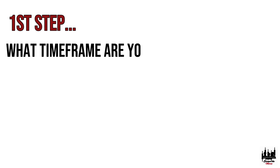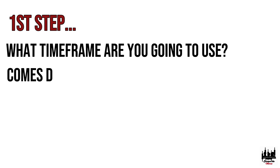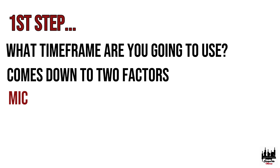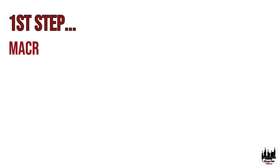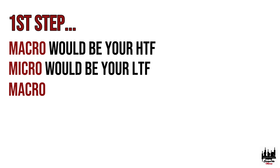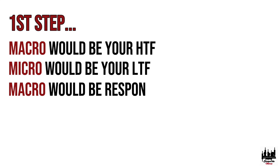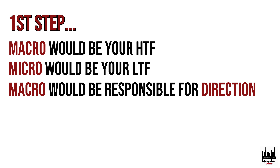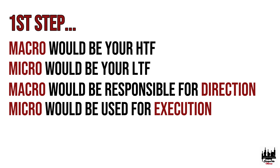The first step is to determine what timeframes you're going to use. It all comes down to two entities: macro and micro. Your macro would be your higher timeframe, your micro would be your lower timeframe. Your macro is responsible for your direction or bias, the way you're anticipating order flow. Micro is where you look for execution or sub-clues for your execution.